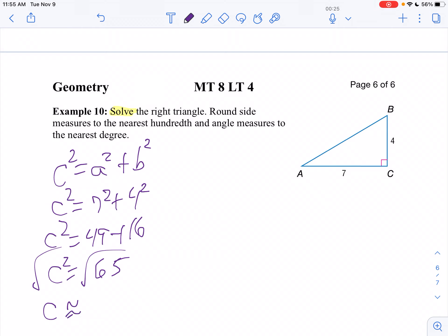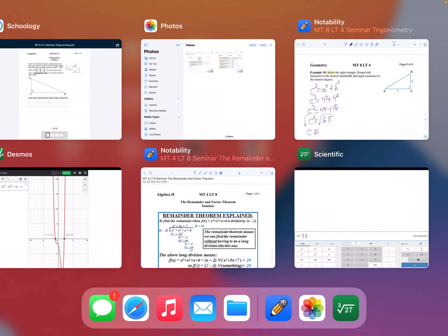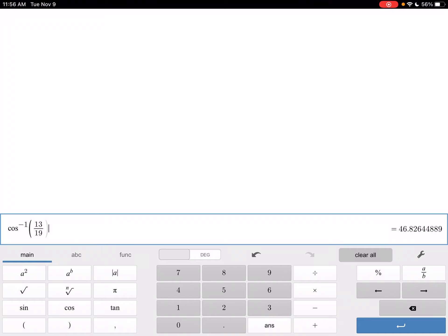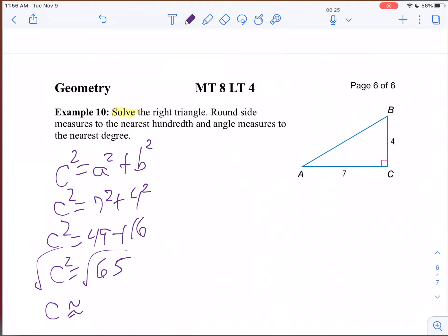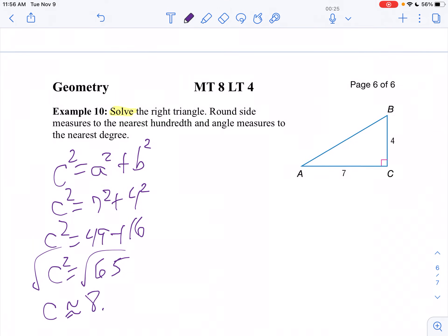But I want to round that to the nearest hundredth. So I'm going to use my calculator. I'm going to take the square root of 65. So we know that's 8.06 approximately. So my hypotenuse is about 8.06.